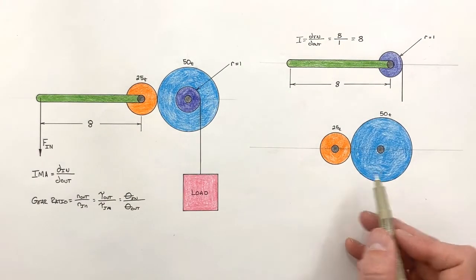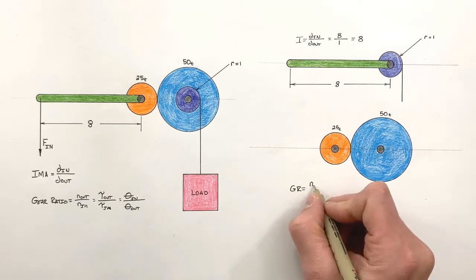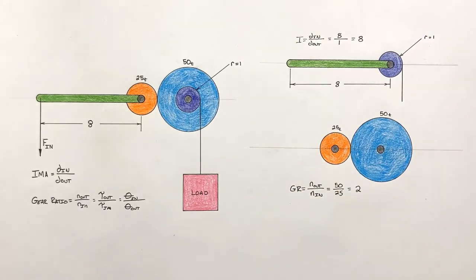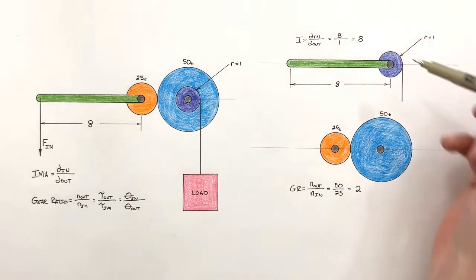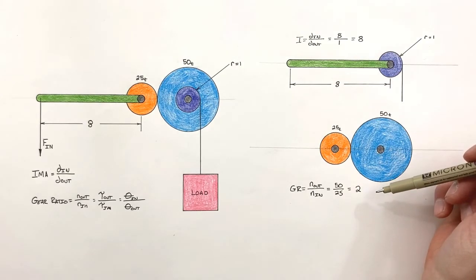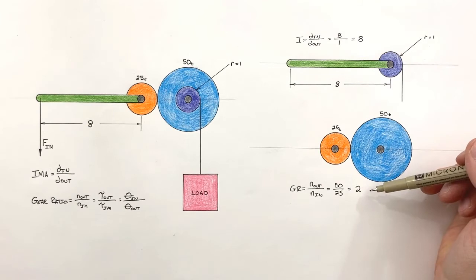Looking at our gear train, we know gear ratio is tooth count on the output over tooth count on the input. And much like when we're dealing with regular compound machines, where we have a series of simple machines connected together, all we need to do here to find the total IMA is simply multiply together our IMAs by our gear ratios.